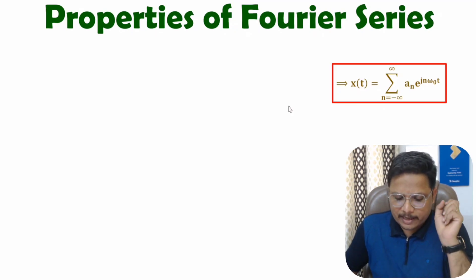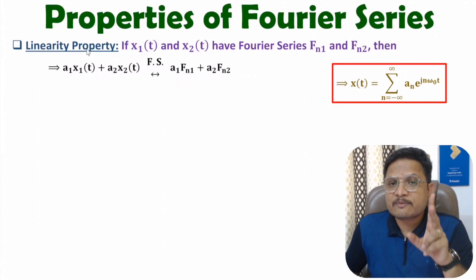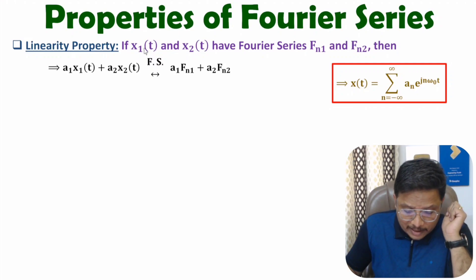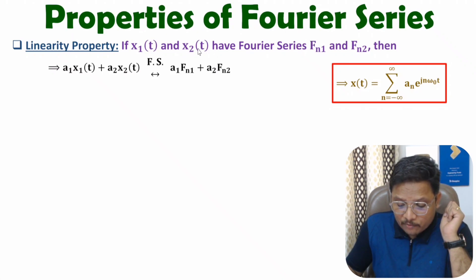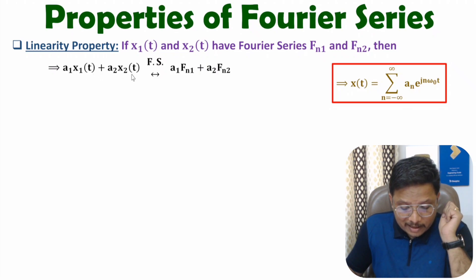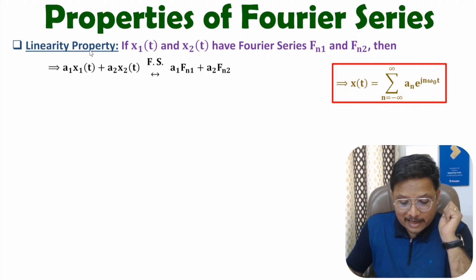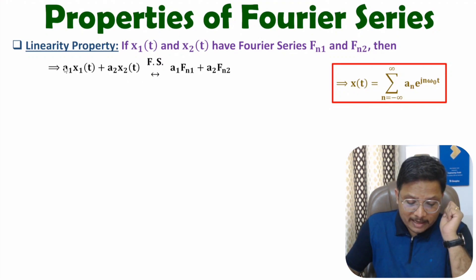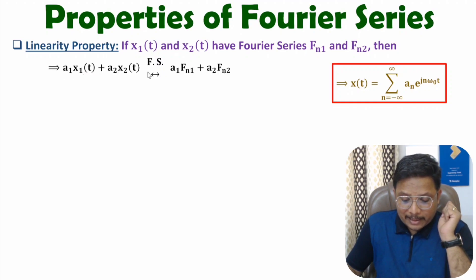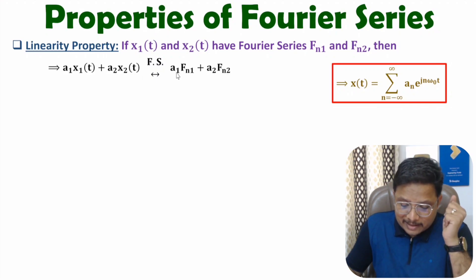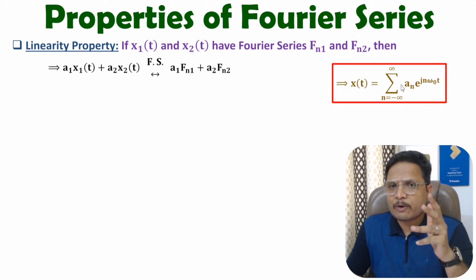The first property is the linearity property. Fourier series follows linearity. If you have two signals x1(t) and x2(t), with x1(t) having Fourier series fn1 and x2(t) having fn2, then the signal a1·x1(t) + a2·x2(t) will have Fourier series a1·fn1 + a2·fn2. If you multiply constant a1 with x1(t), Fourier series will be a1·fn1, and similarly a2·fn2 for x2(t). This algebraic sum confirms that Fourier series follows linearity.